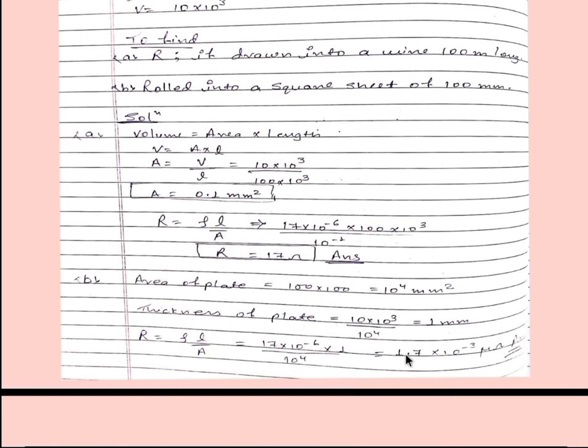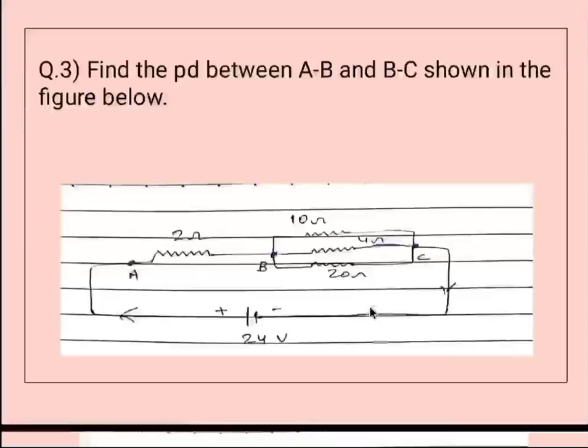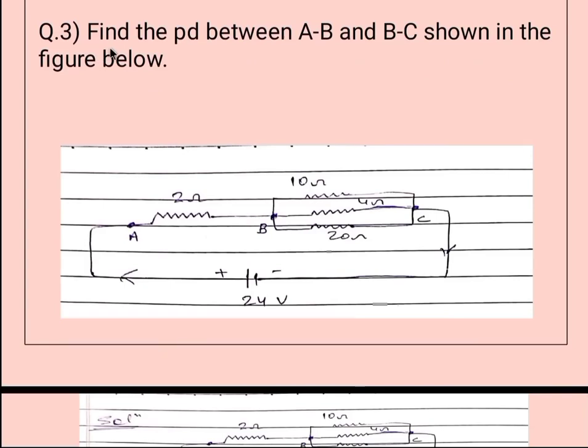After calculating this we will get resistance is equal to 1.7 into 10 to the power minus 3 micro ohm mm.